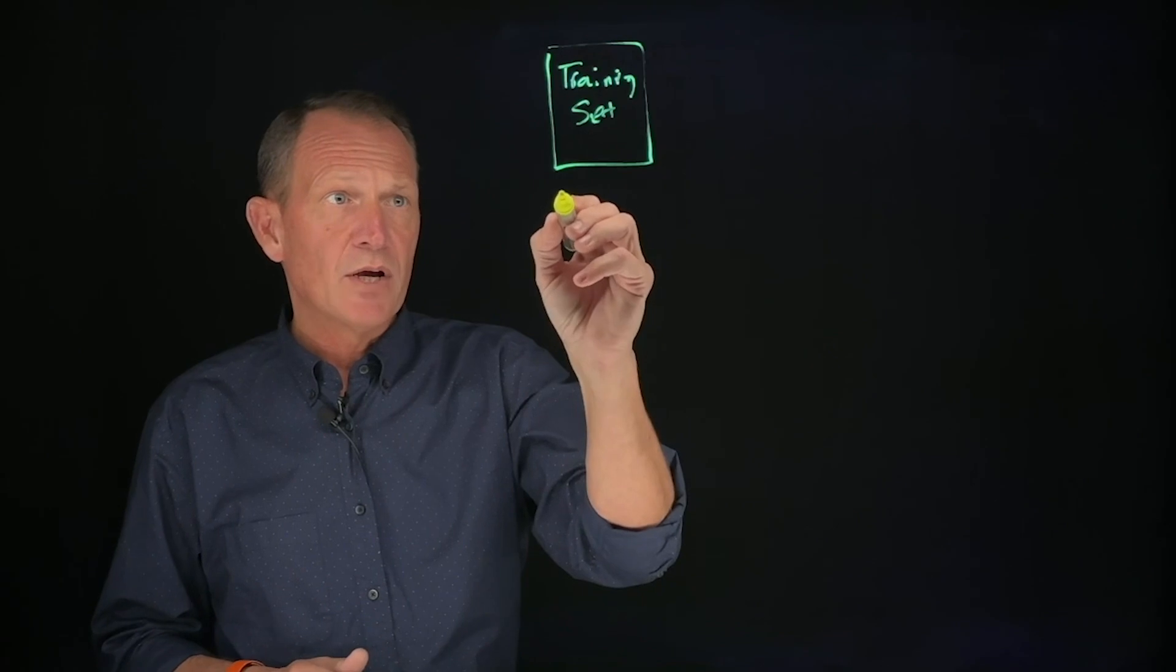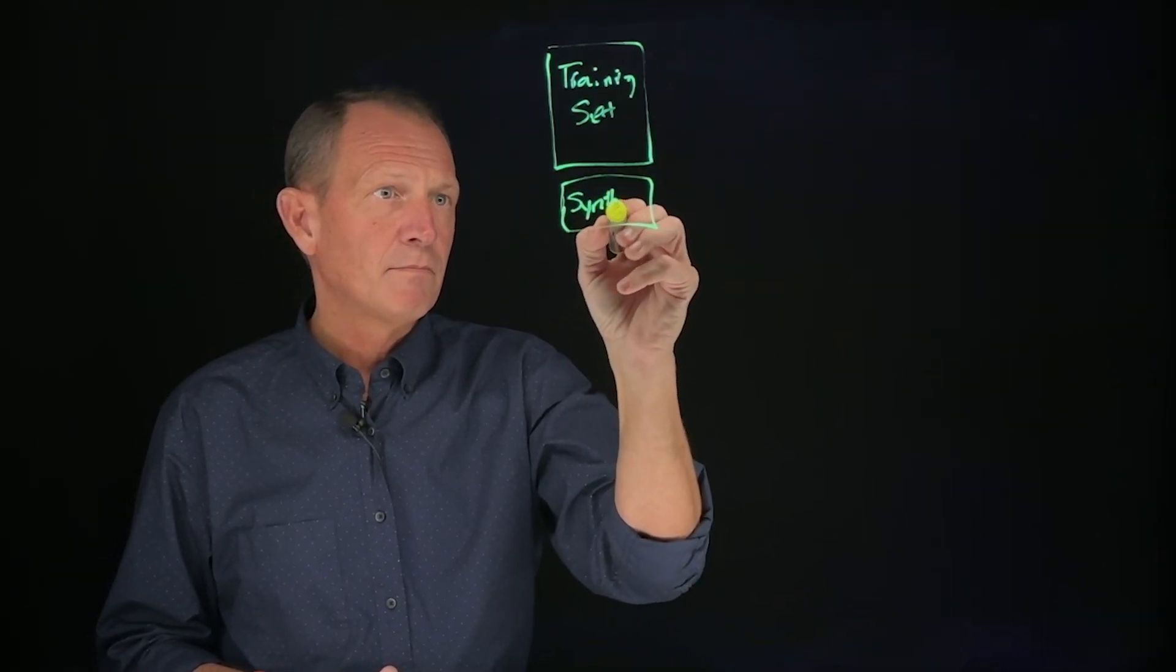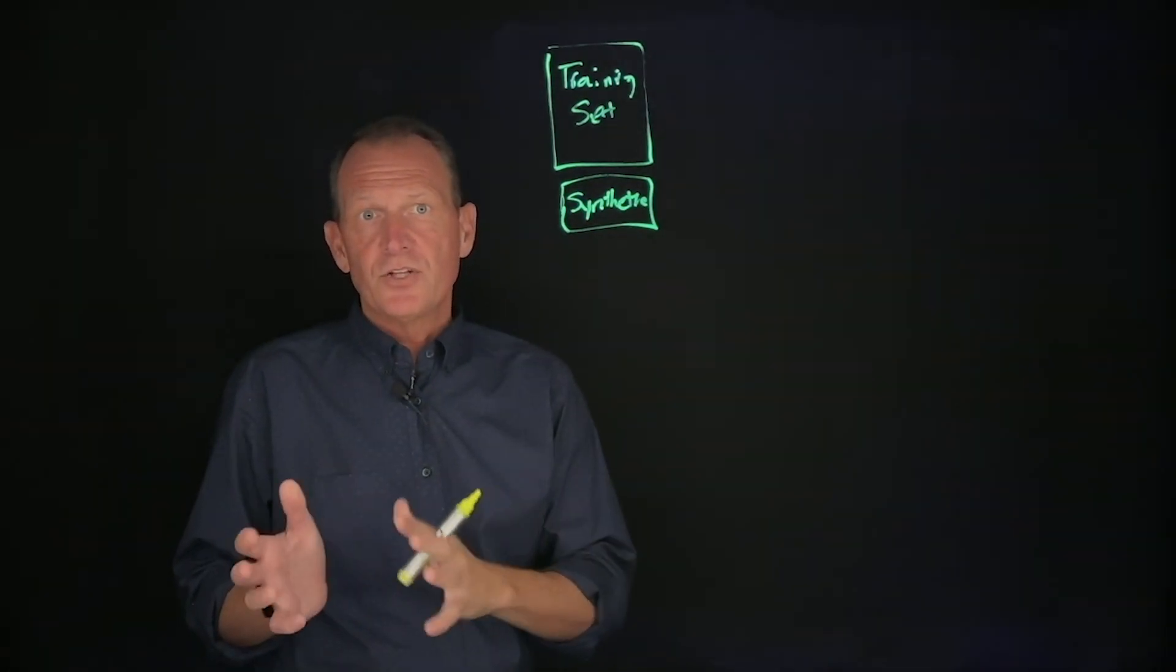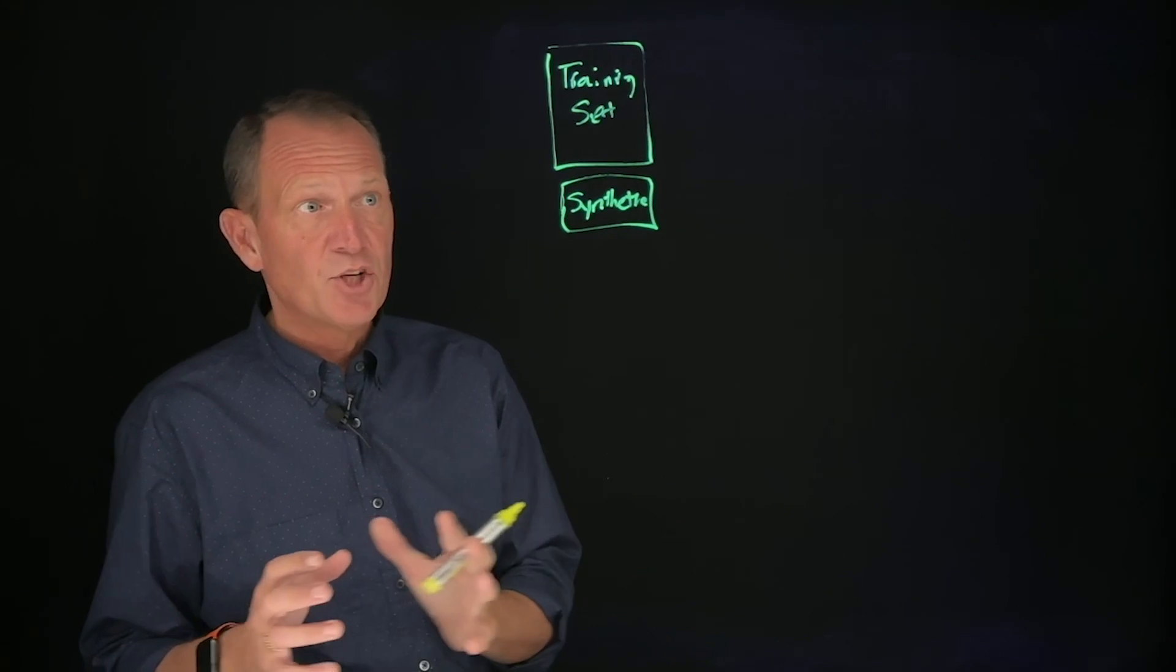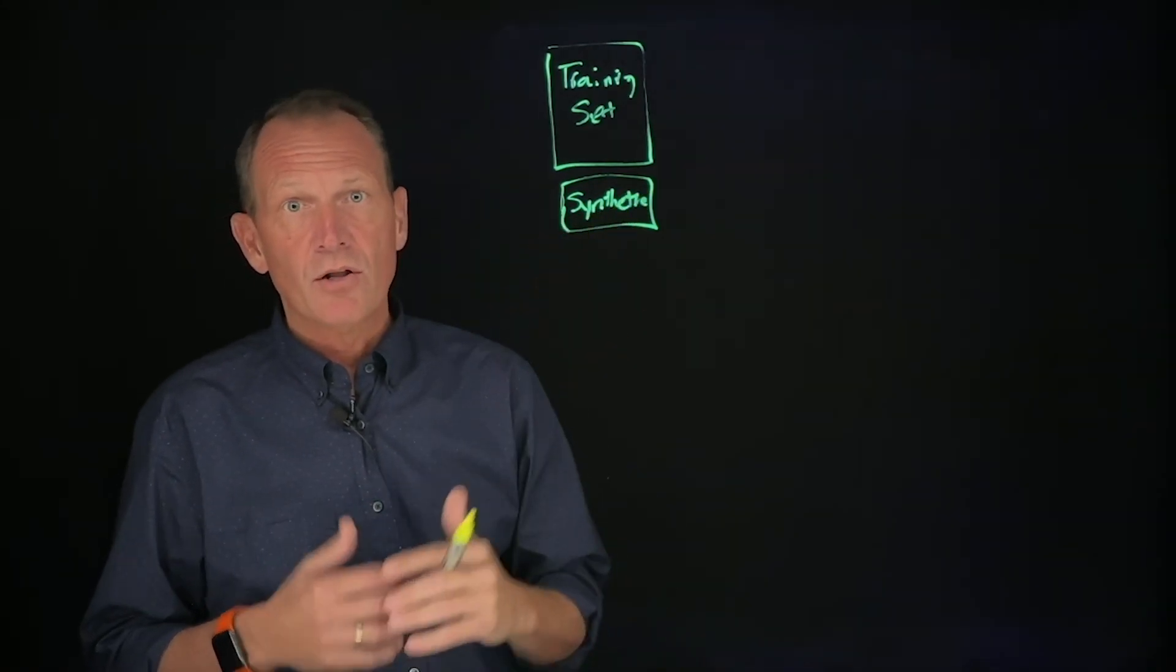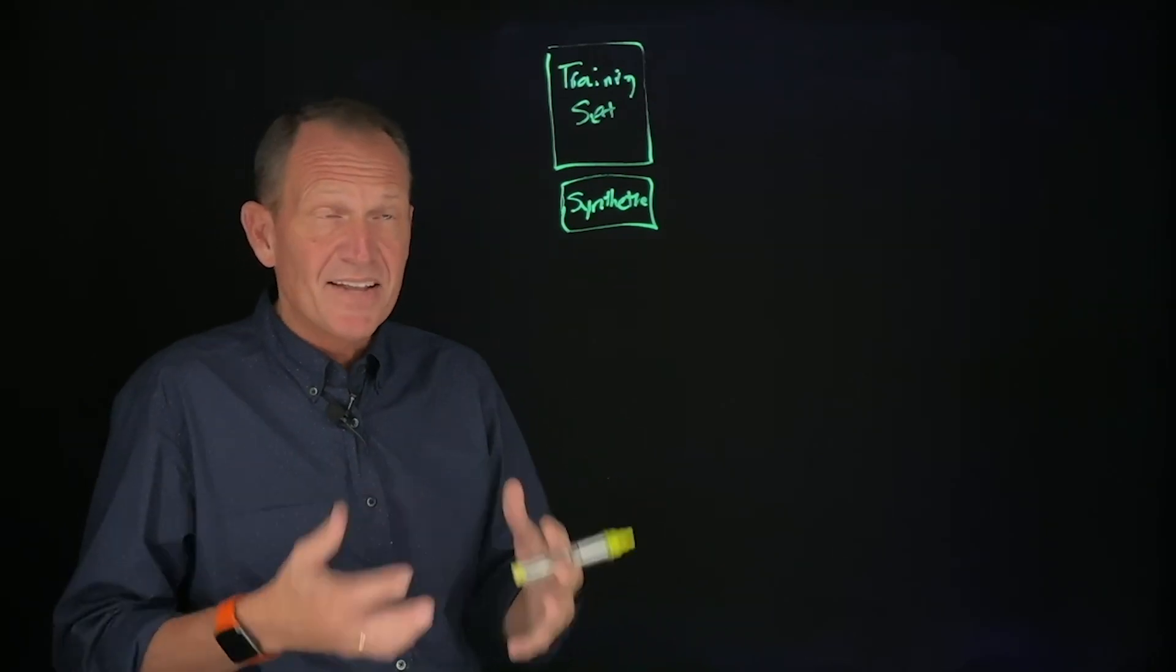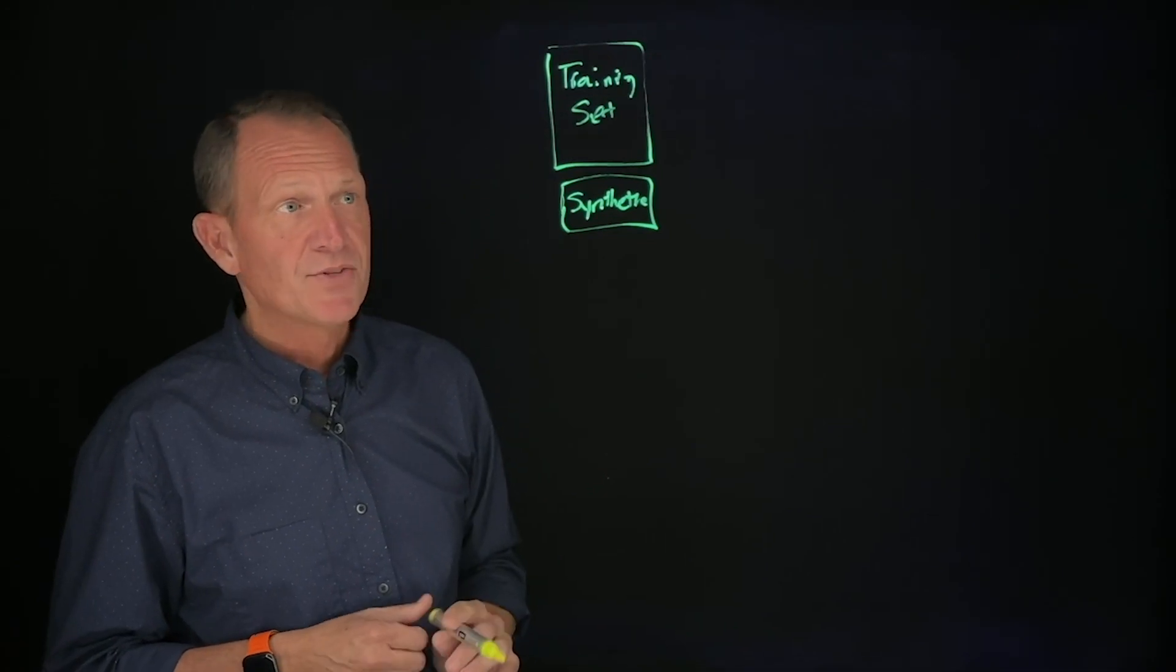In addition to this data that we acquire, we can also generate data. That's called synthetic data. We actually generate answers to questions that we know the answer to. In this way we can provide a higher quality model by giving the model questions and answers which we know to be 100% accurate. That ends up increasing the quality of all the answers across the entire training set.